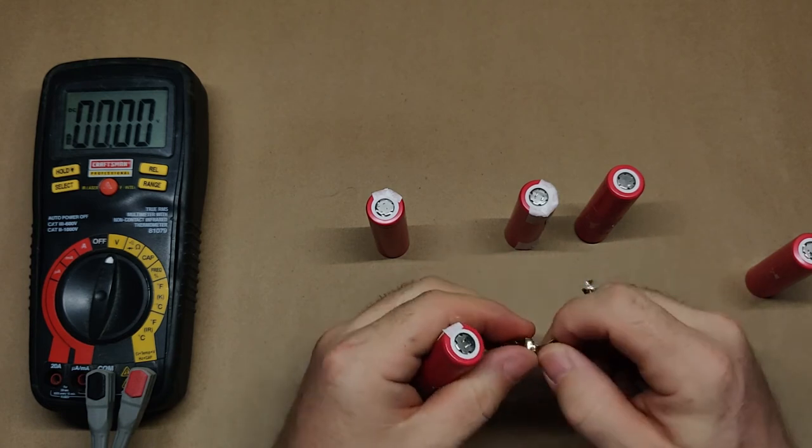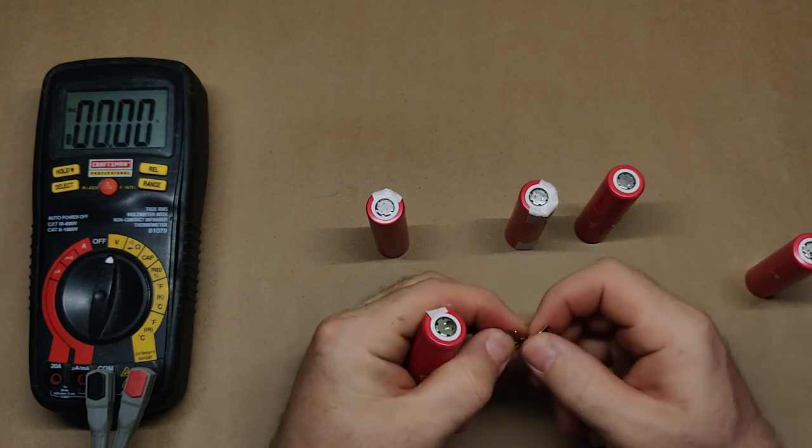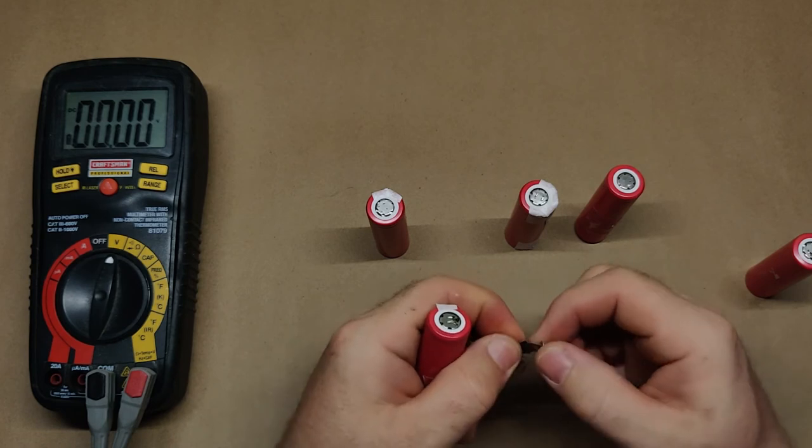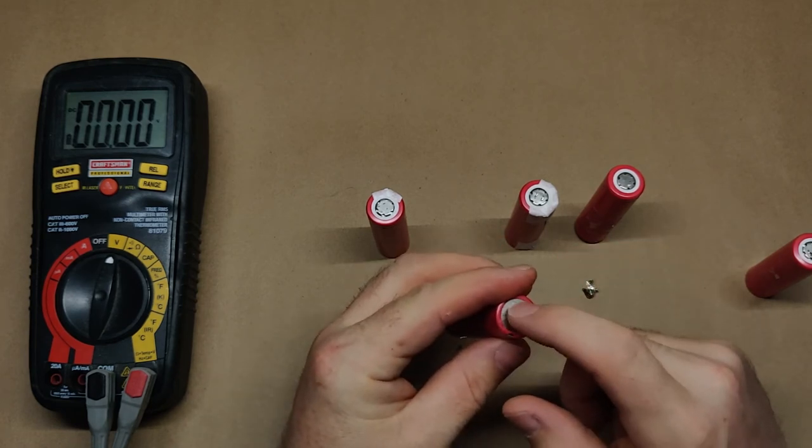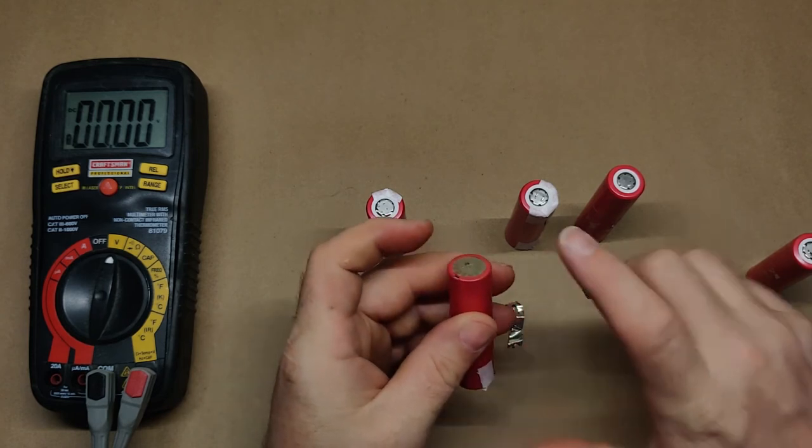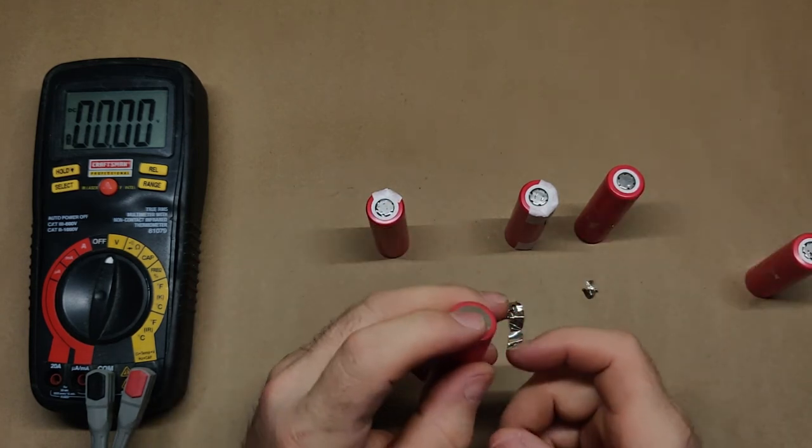And they had these, which I believe are nickel strips. And they were tack welded, spot welded, onto each end of the battery. And that's how it was all put together.